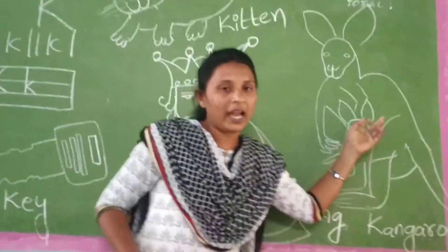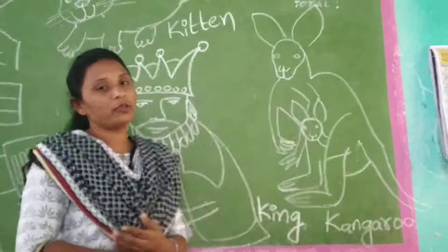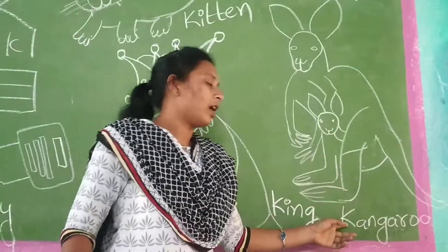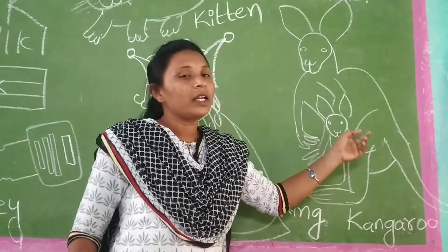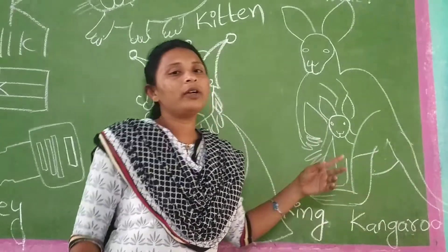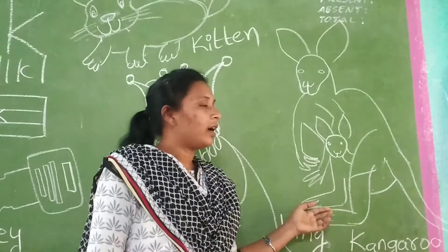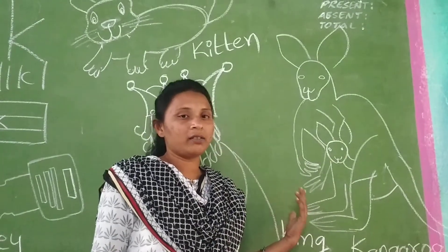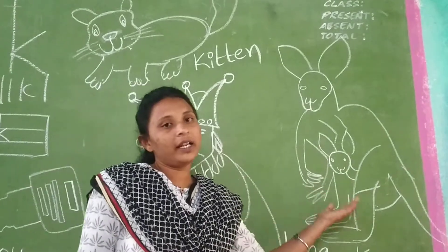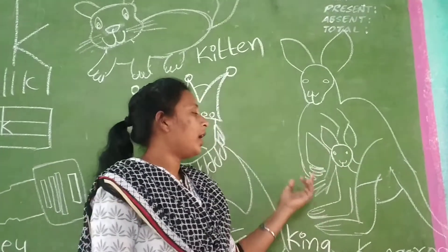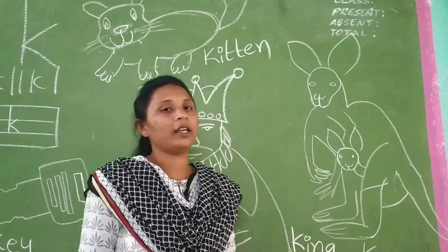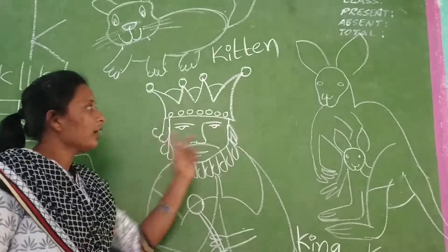This animal carries her babies in its pouch — that is kangaroo. Kangaroo carries the babies in its pouch. Birds keep their babies in a nest, lions keep in a den, and kangaroo keeps its children in its pouch. And K for Kangaroo.